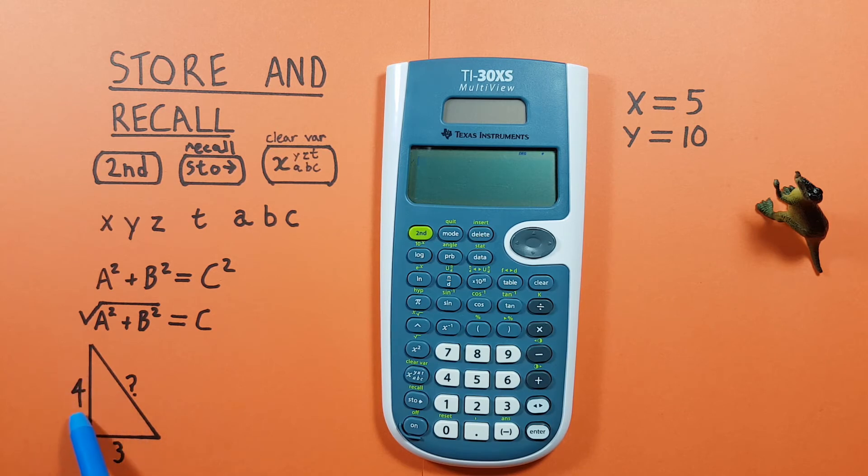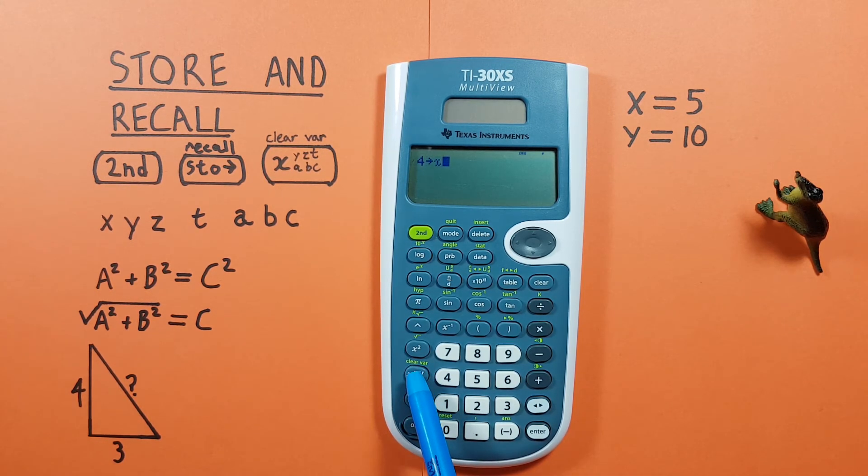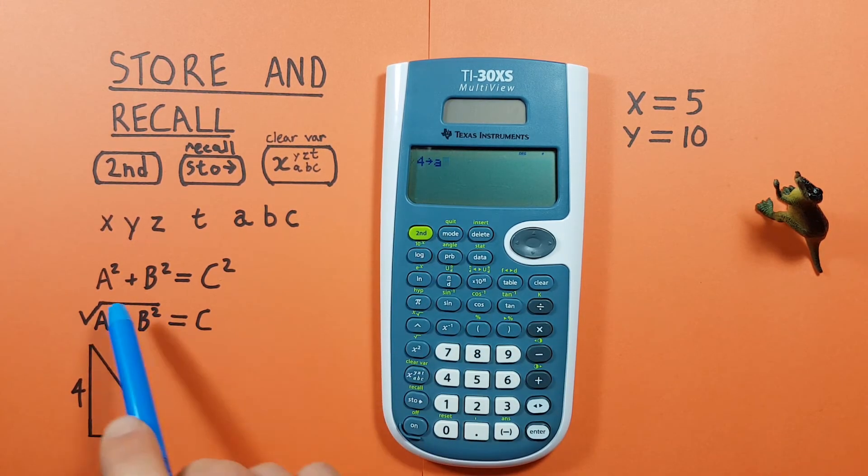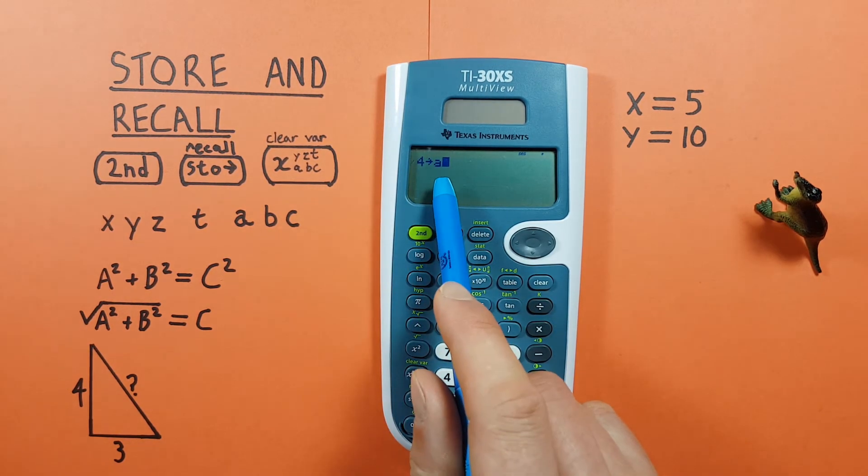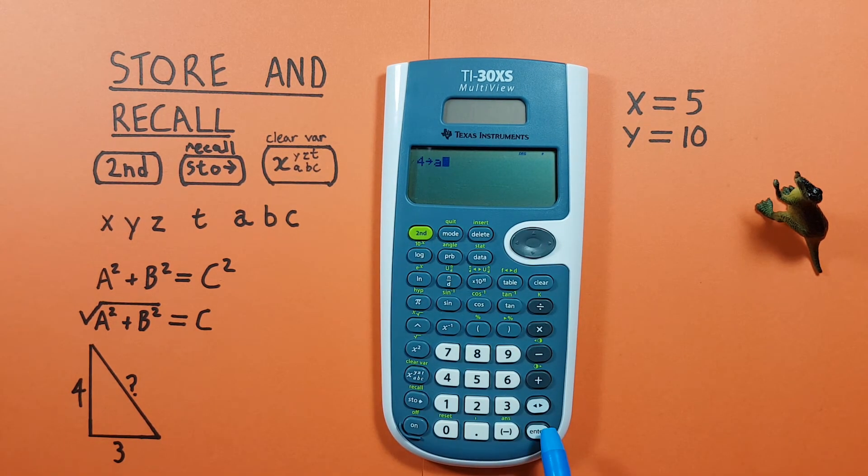So let's store the 4 as our a side. Again, place the 4 on the screen, hit the store key, and then cycle until you have the a memory slot. You can use any slot, but a is easy to remember in this case. Alright, 4 into a, press enter, there we go.